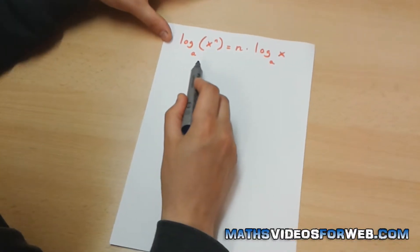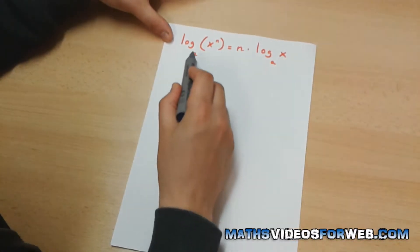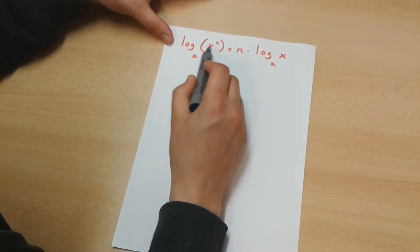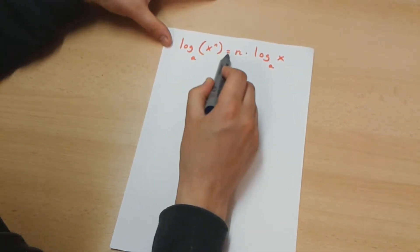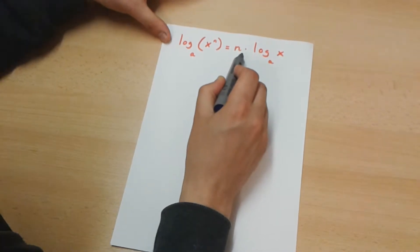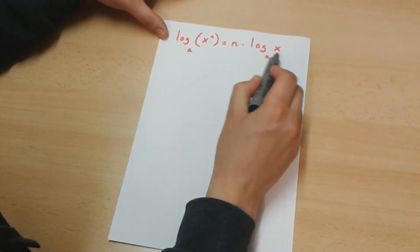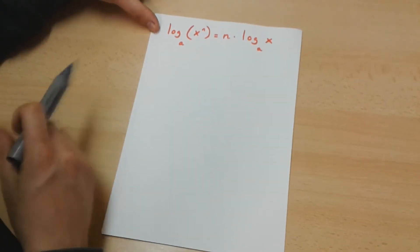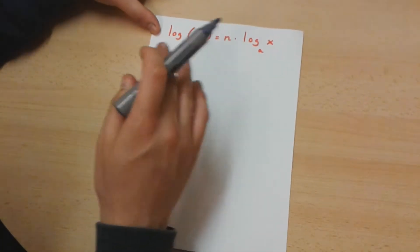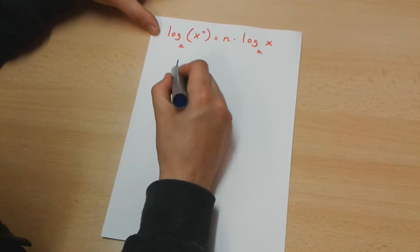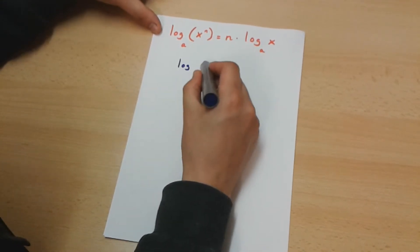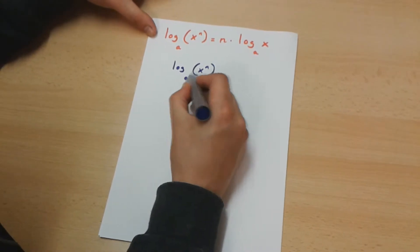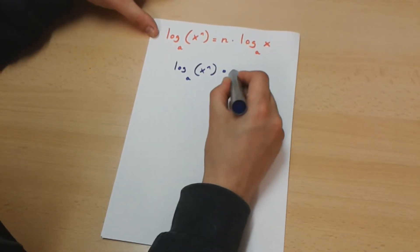In this video, I'm going to be proving that the logarithm of x to the power of n to the base a is equal to n multiplied by the logarithm of x to the base a. Now in order to do this, I'm first going to have to say that the logarithm of x to the power of n to the base a is equal to p.